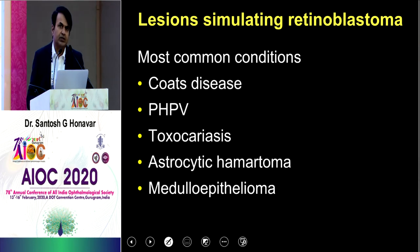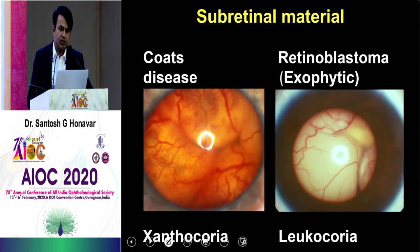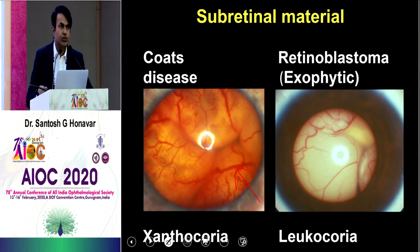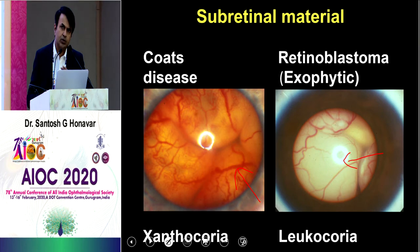Now we should know what conditions simulate retinoblastoma. These are the five top ones — the order may differ depending on where you work or your referral pattern. Coats disease is very different from retinoblastoma in its manifestation. It presents with xanthochoria — a yellowish, golden reflex — whereas in retinoblastoma you find a stark white reflex, a huge difference.